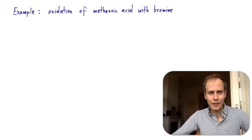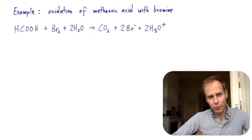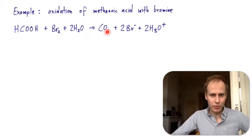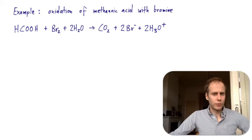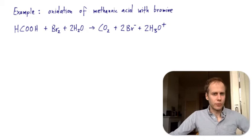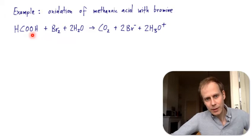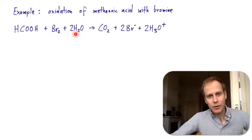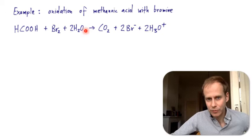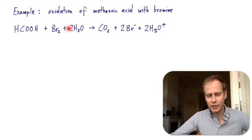Let's look at an example: the oxidation of methanoic acid with bromine. Here we have methanoic acid, bromine, and water. The oxidation products are carbon dioxide, two bromine anions, and two hydronium ions. This has three reactants, so we can set up a rate law. We might expect it to be proportional to the concentrations of methanoic acid, bromine, and water. However, water is the solvent, so it's at constant concentration and can be neglected in the rate law.